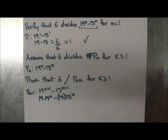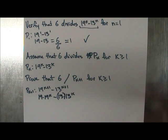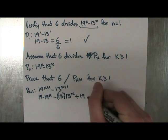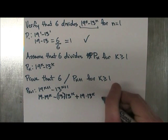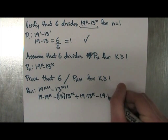If you want to pause the video right now, take a second to think about it, see if you can figure it out. But I'm going to continue and just give you guys the answer. And in fact, you have to add 19 times 13^k and subtract 19 times 13^k.